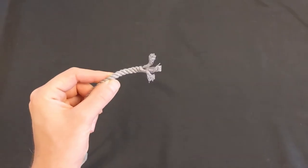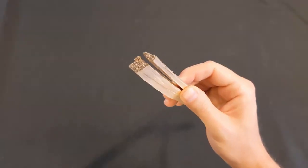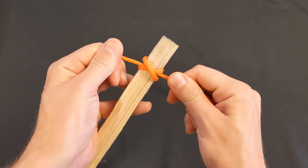The constrictor knot can be used to fix the end of a frayed rope, to tighten the opening of a bag, to clamp objects together for gluing, and many other uses.